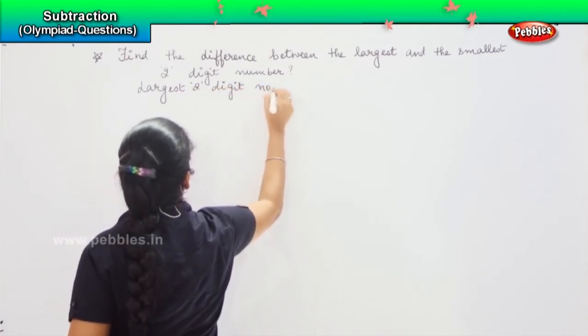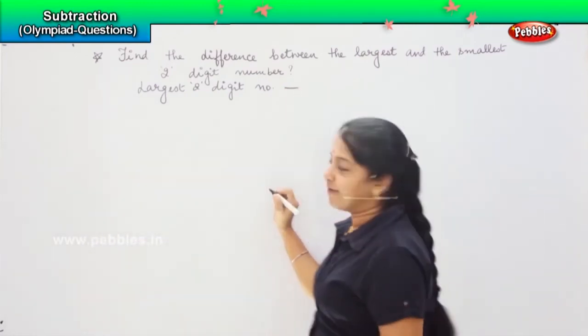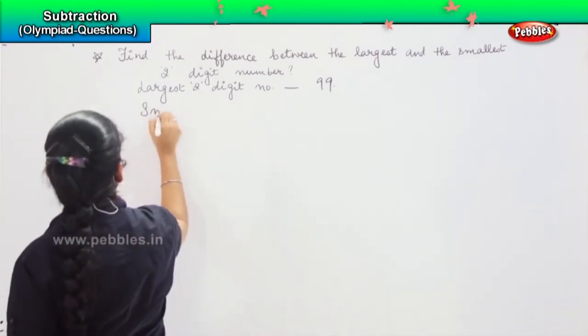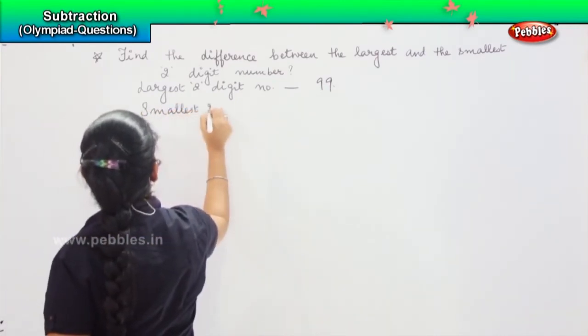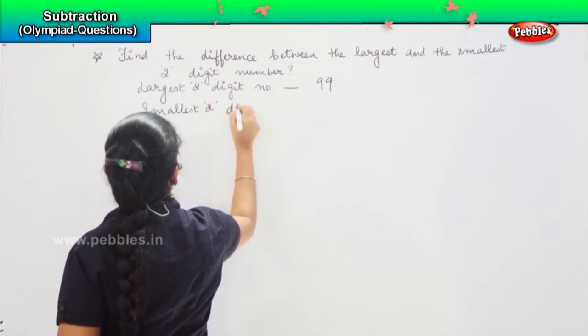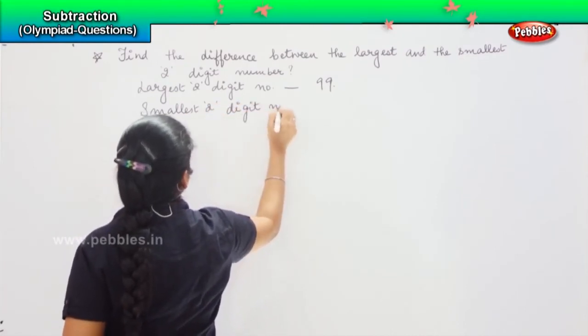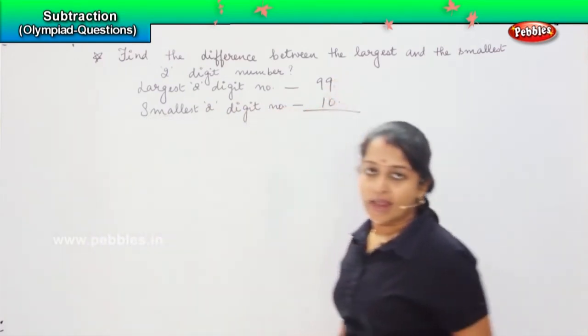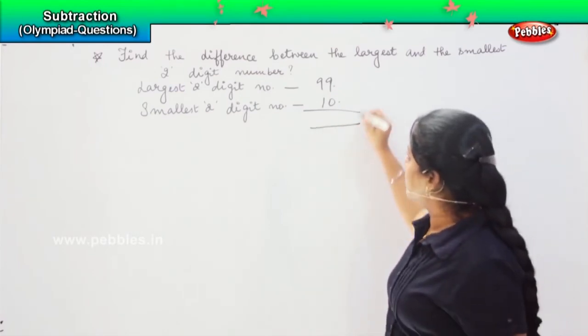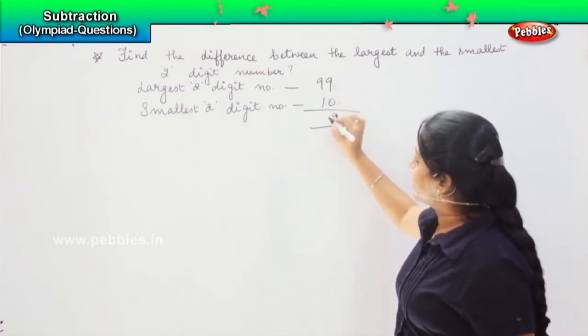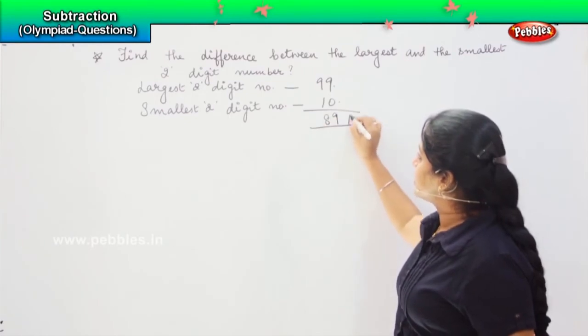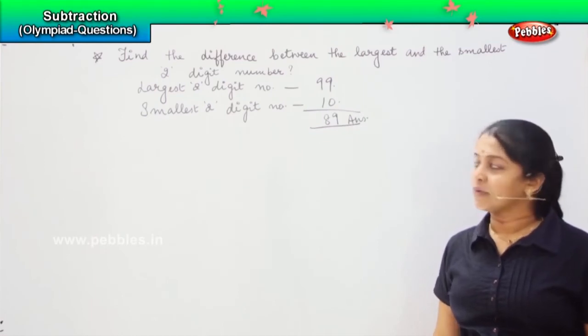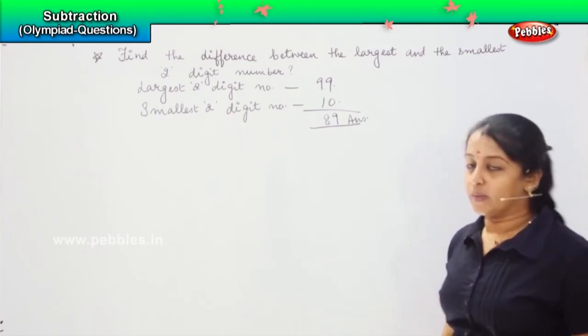What is it? Just think and let me know. Very good. It is 99. Good. And what is the smallest two-digit number? Good. It is 10. Right. So, you need to find the difference between 99 and 10. So, 9 minus 0 is 9, and 9 minus 1 is 8. So, the answer is 89. Is it clear? Did you understand?